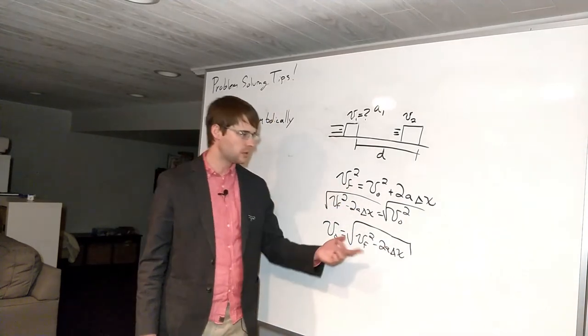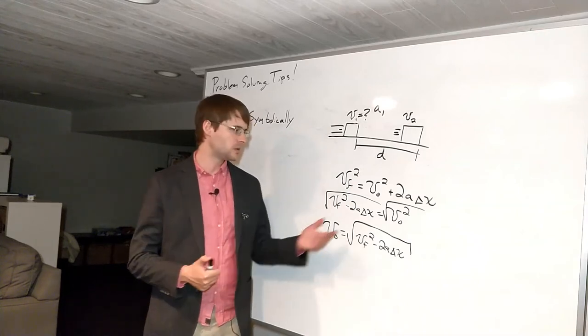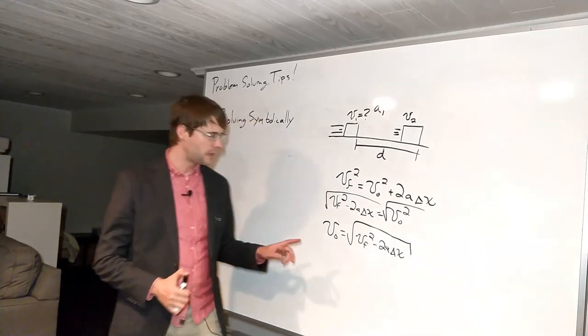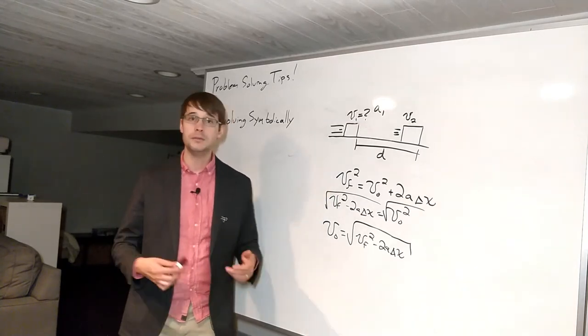I mean it's the same equation here just rewritten, so it's not anything too complicated. It's just a little bit of algebra here step to step. Now the thing about this though is this is not v1, this is just generally v0.